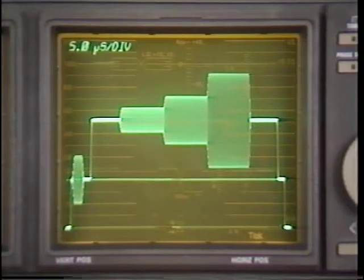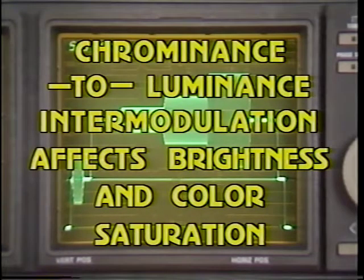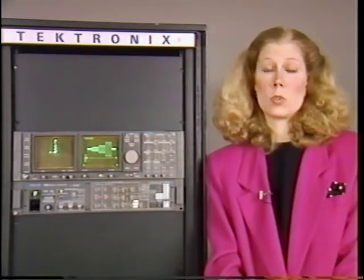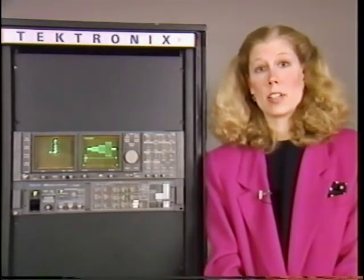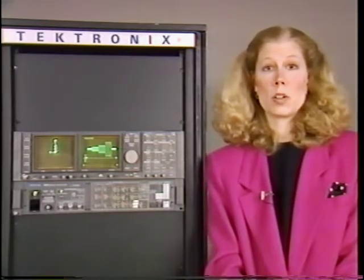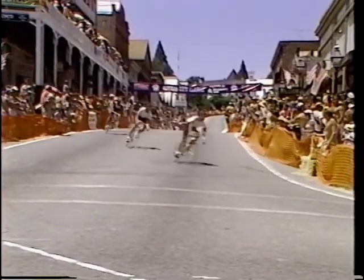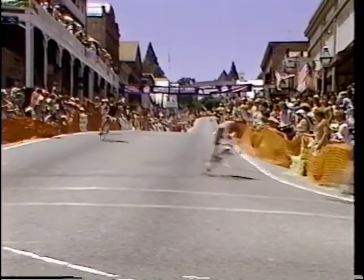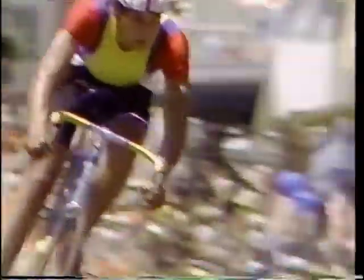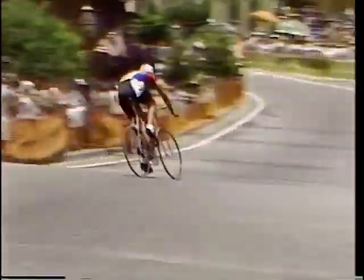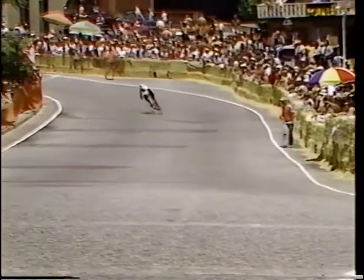Chrominance to luminance intermodulation will cause both luminance levels and color saturation to be affected. It's hard to pin down a specific effect, but in general, color saturation and brightness will be incorrect in some kinds of pictures. That said, it takes a significant amount of distortion before it's even noticeable in the picture, and it's extremely difficult to distinguish between the various distortions. The picture effects of chrominance nonlinearity distortions are actually very similar to those caused by differential phase and gain, making it generally impossible to tell exactly what's going on just by looking at the picture.